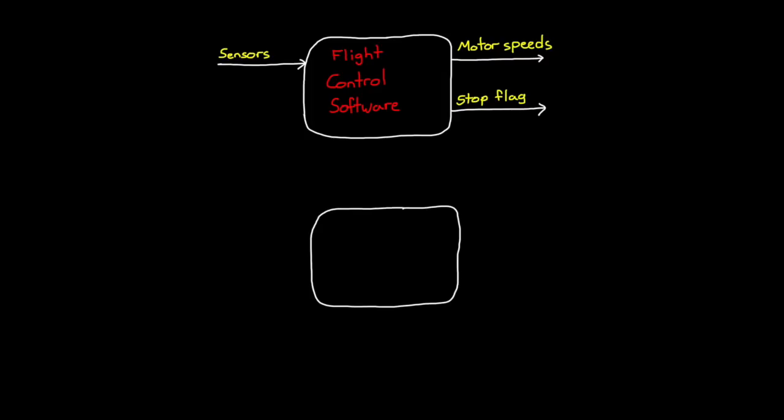The second block we'll call model, and it represents everything else. Anything that isn't the flight code. This includes the rest of the mini-drone firmware, the hardware and the atmosphere it's flying in, everything. But we'll get into the details of that in just a bit.